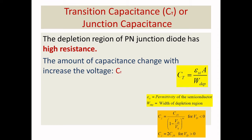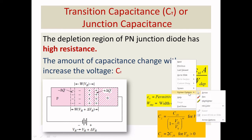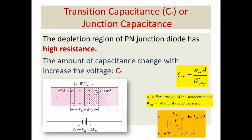When you speak about transition capacitance, it occurs predominantly in reverse bias, and there is a partial capacitance effect even in forward bias. When V_D is less than 0, it occurs in reverse bias; when V_D is greater than 0, it occurs in forward bias. When you apply reverse bias, the width of the depletion region is large. When the width of the depletion region is large, the capacitance value will be very small.